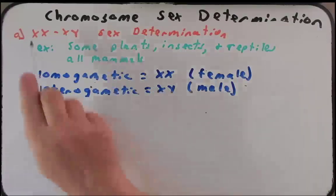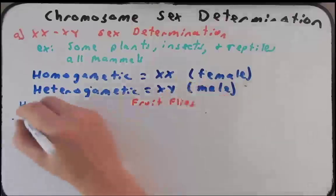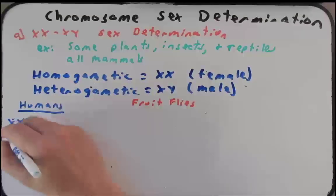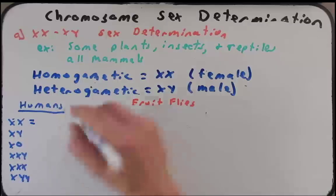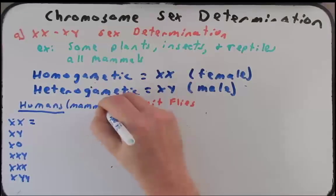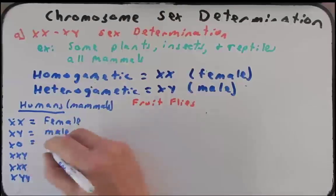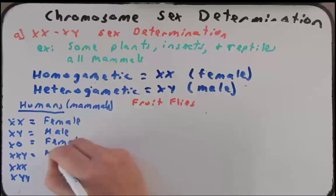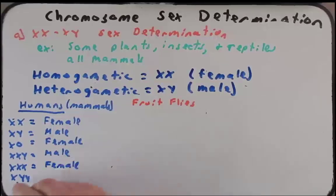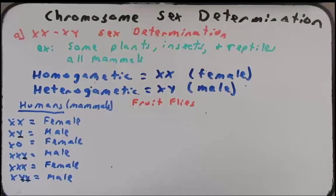To understand how different organisms use the XX/XY system differently, let's compare humans with fruit flies. In humans — and this would be true for other mammals — an XX individual is female and an XY individual is male. XO is Turner syndrome and that individual is female. XXY is male, XXX is female, and XYY is male. What's common amongst all the males is the presence of a Y chromosome, and what's common amongst all the females is an absence of a Y chromosome.